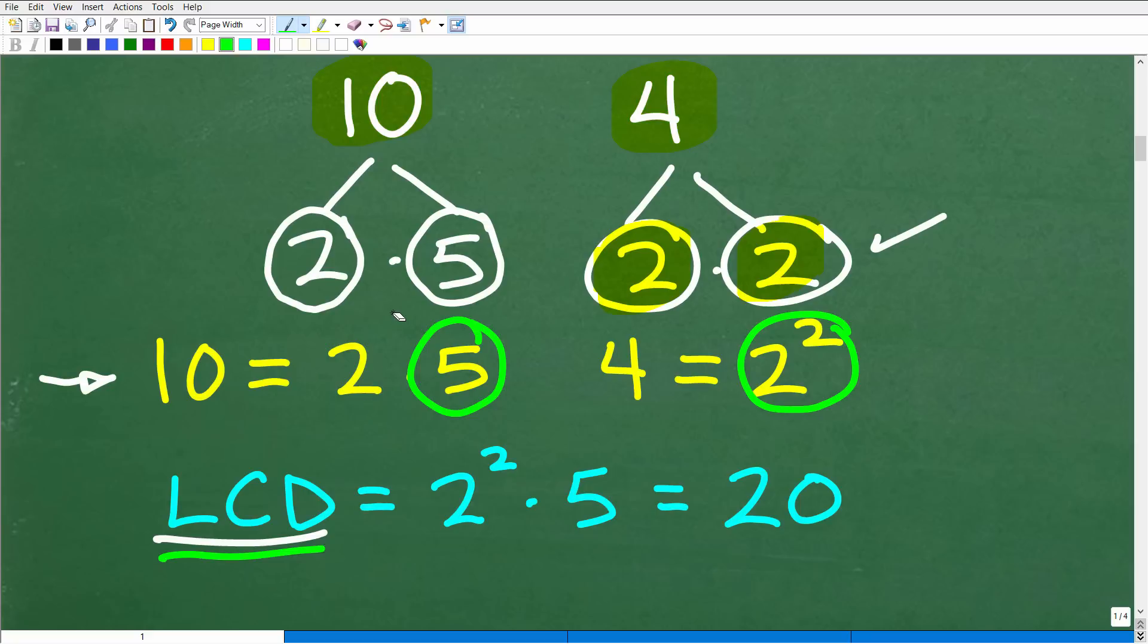We have a 2 and a 2 squared. This 2 is really 2 to the 1st. Anytime you have the same number but to a different power - if you have 2 to the 1st, 2 squared, and 2 cubed as part of our prime factors - you're always going to select the highest power of that factor.